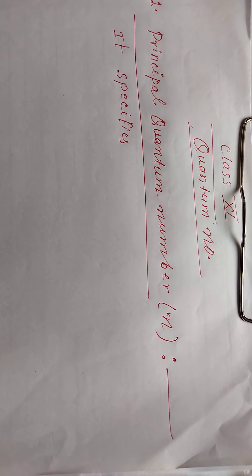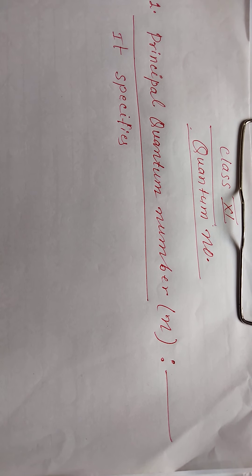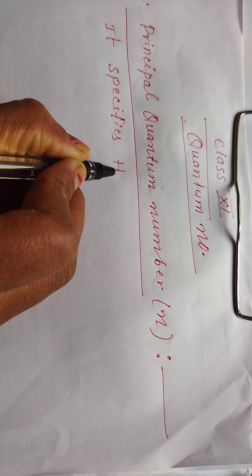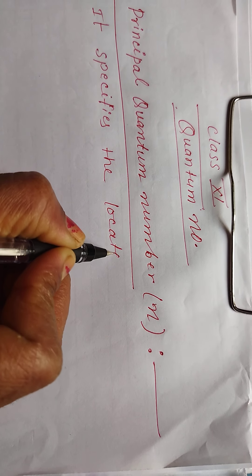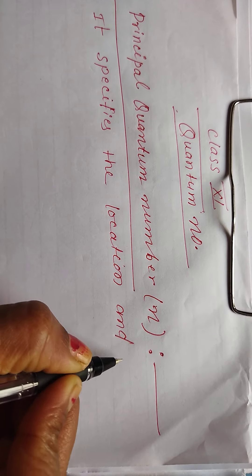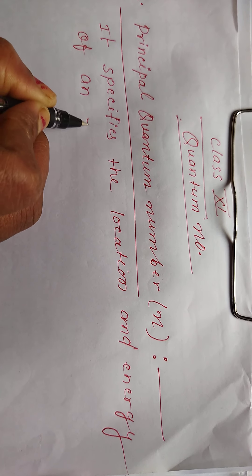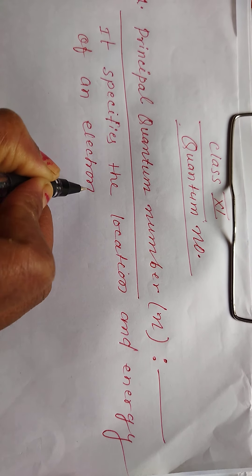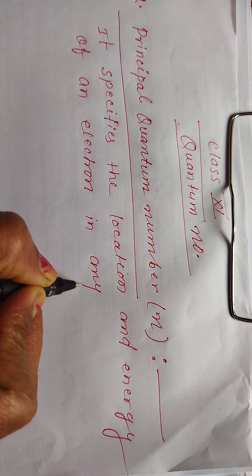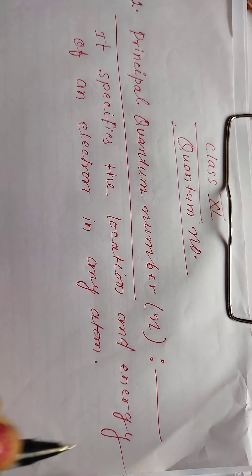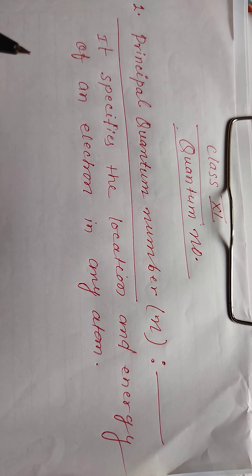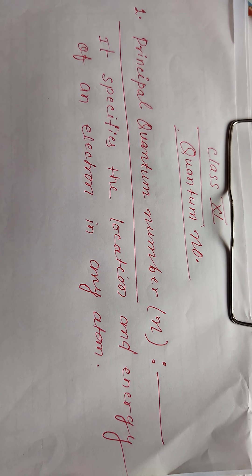I am going to discuss about the quantum number — the principal quantum number. It is denoted by n. It specifies the location and energy of an electron in any atom.